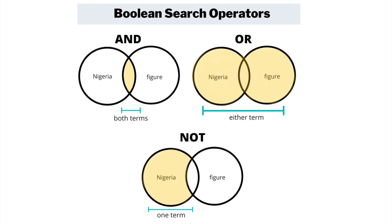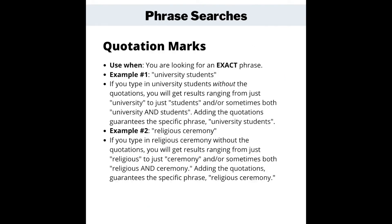In addition to Boolean operators, you can use search modifiers to help narrow or broaden your search. For example, quotation marks will search for the exact phrase in quotation marks. This is used for phrases or objects with more than two words. If you type in university students without quotations, you will get results ranging from just university to just students. Adding the quotations guarantees the specific phrase university students. I've included another example if you want to pause the video, but let's move on to wildcards.